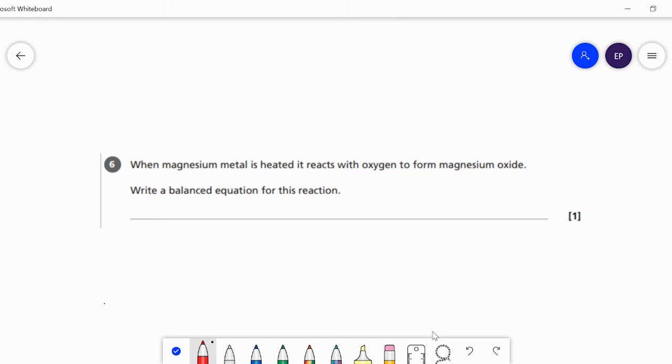When magnesium metal is heated it reacts with oxygen to form magnesium oxide. Write a balanced equation for this reaction.